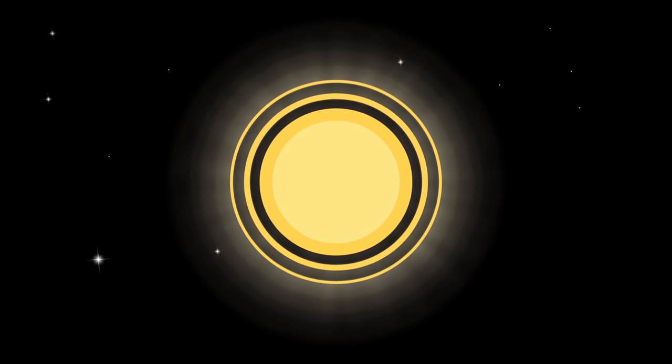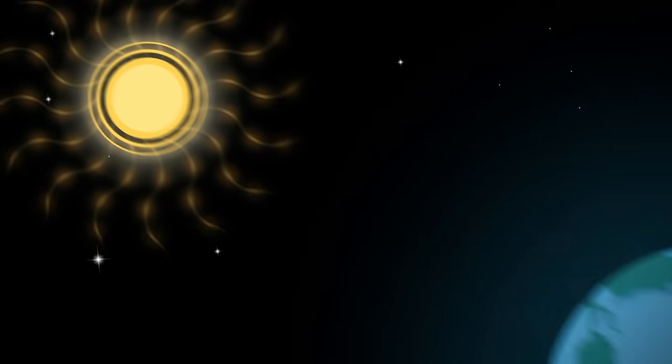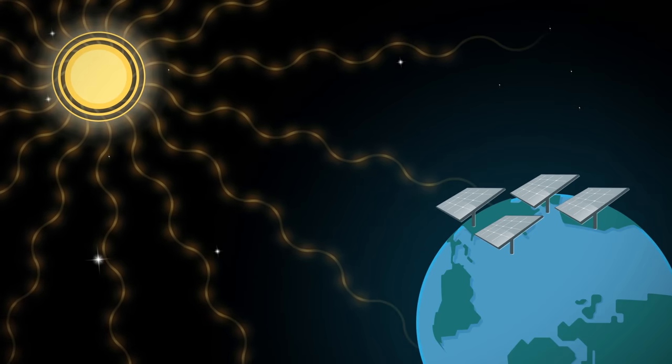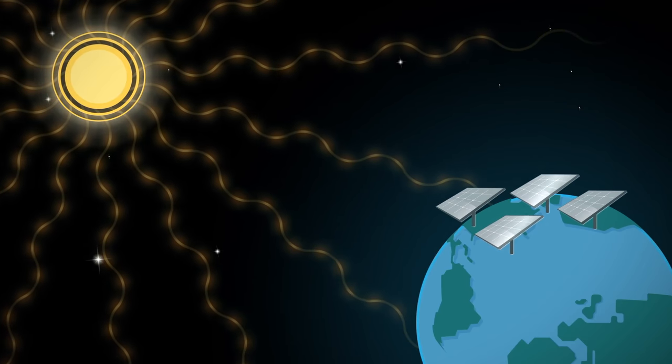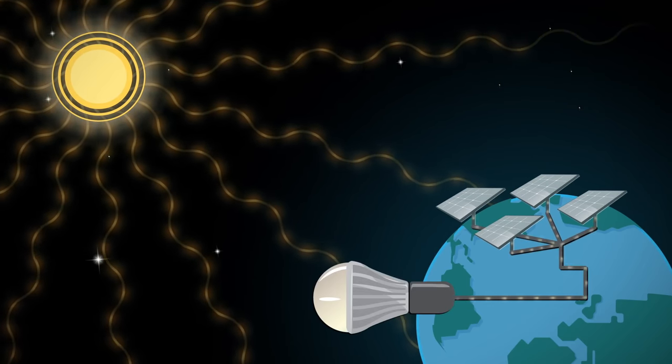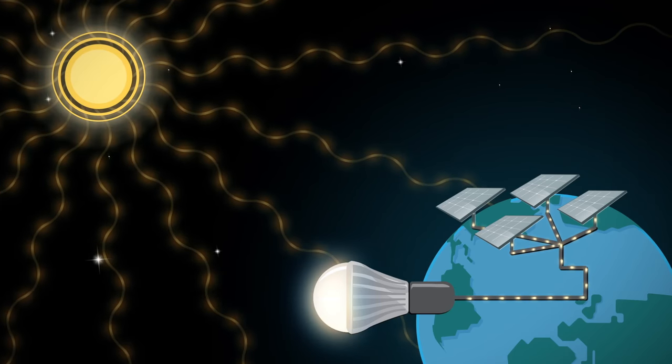But how do these PVs work? Of course it all starts with our favorite star, the Sun. Sunlight quickly makes its way to our planet and eventually hits a solar panel. By absorbing the sunlight and processing its energy, the solar panel produces electricity.